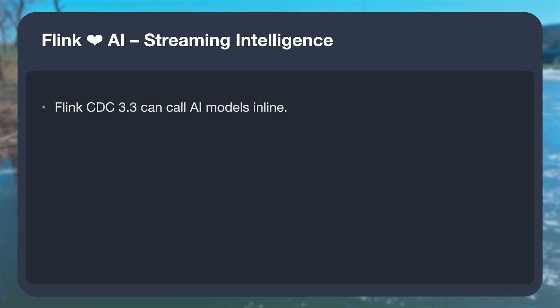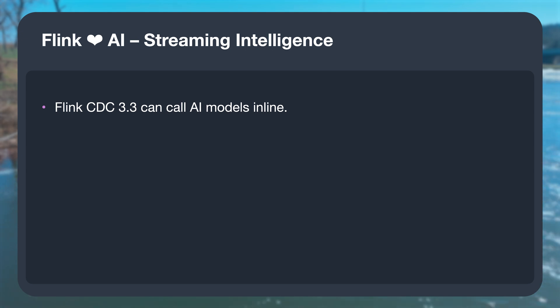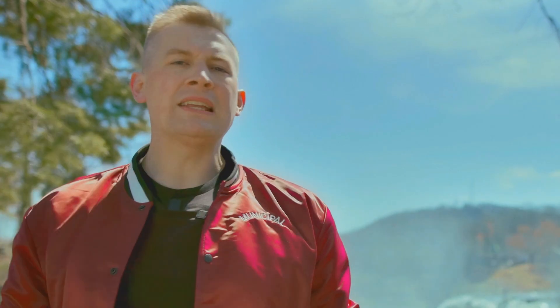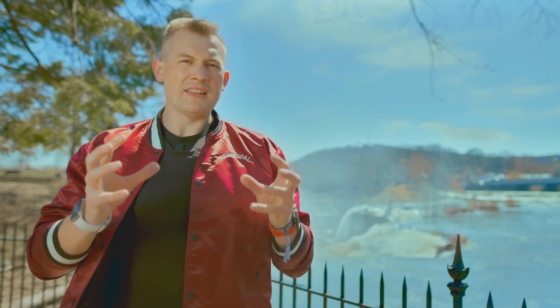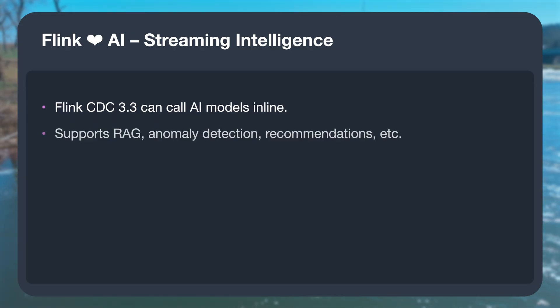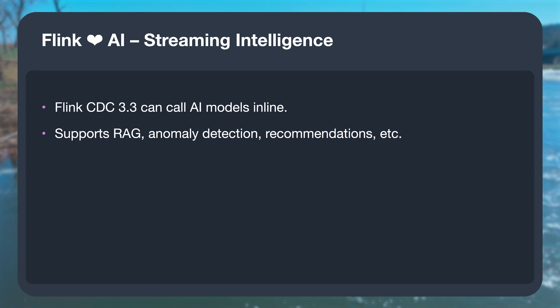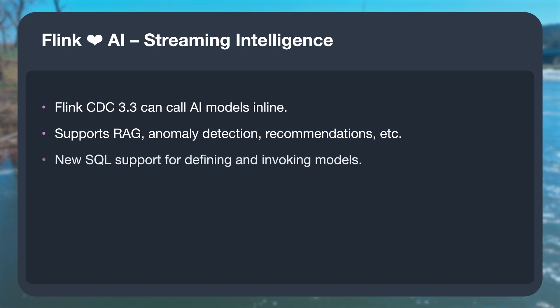Flink 2.0 brings support for AI models right into stream processing pipelines. With Flink CDC 3.3, you can now run models like GPT on your events as they come in. Think about real-time fraud detection and personalized recommendations on the fly. And soon, you will be able to call models directly from Flink SQL.